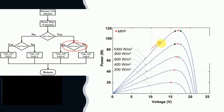For example, we have the power increasing such that the voltage is also increasing. Therefore, if the power is increasing and the voltage is increasing, it provides information to the system that the operating point is moving towards the maximum power point — meaning it is on the left-hand side of the maximum power point. If the power is increasing while the voltage is decreasing, this indicates that we are operating on the right-hand side of the maximum power point.